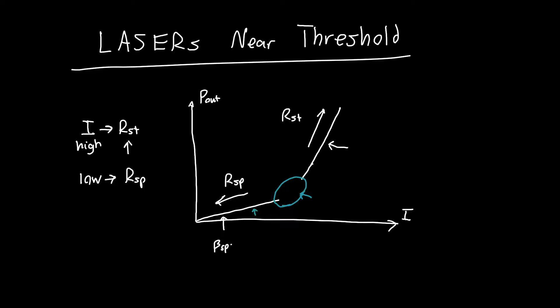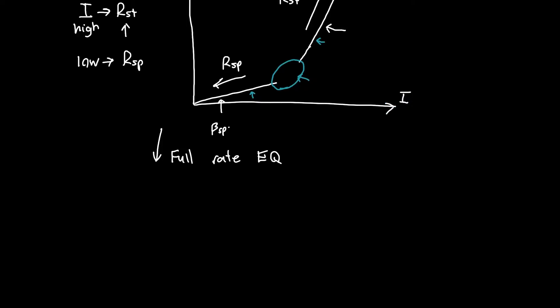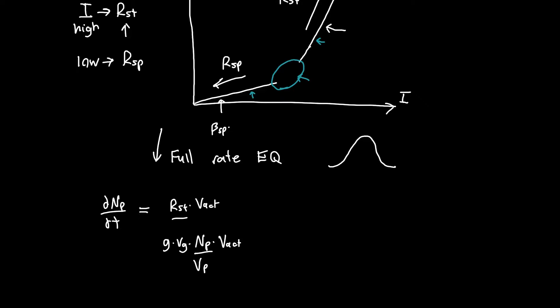What does the transition from all spontaneous emission to all stimulated emission look like? To figure it out, we just need to solve the full rate equation. We have our photon rate equation — the number of photons changing per unit time. This is our stimulated emission times the active volume, which we can write as the gain times the group velocity times the number of photons, multiplied by the active volume. We divide by the photon volume — the volume within which our electromagnetic waves are confined — and replace V_active over V_photon with gamma for ease of notation.